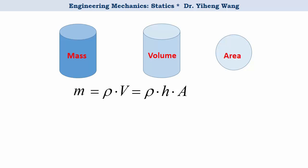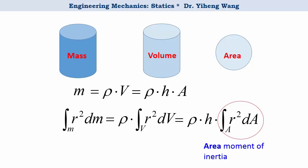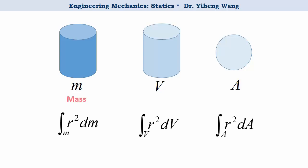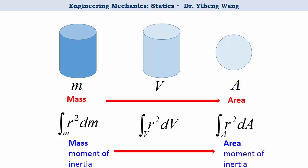Similarly, if the object has a mass moment of inertia calculated about a specified axis, because dm equals density rho times the differential volume dv, then this can be written as constant rho times integration of r squared dv throughout the volume of the object. And again, for constant height h, we can pull this constant outside the integration sign and get this, which is the area moment of inertia. So mass can be reduced to a 2D geometric representation, the area. And similarly, mass moment of inertia can be reduced to a 2D geometric representation, the area moment of inertia.